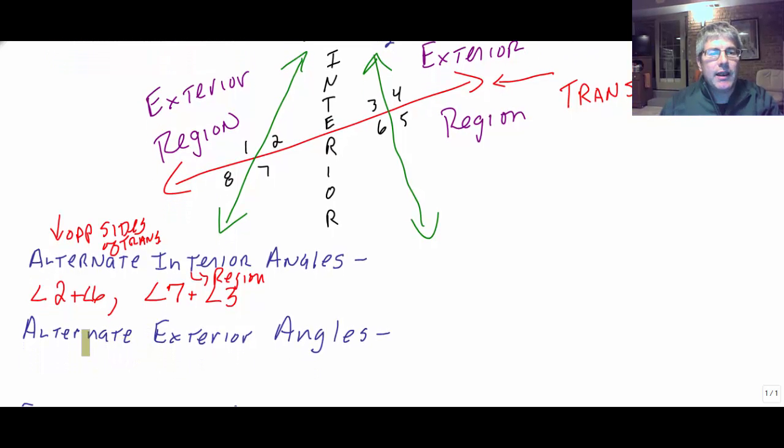So alternate exterior angles, same concept, alternating sides of the transversal, but now we're in the exterior region. So we're going to be working out here. So angle 1 and angle 5 would be alternate exterior angles. They're on alternating sides of the transversal. One's above it, one's below it. And they're both in the exterior region.